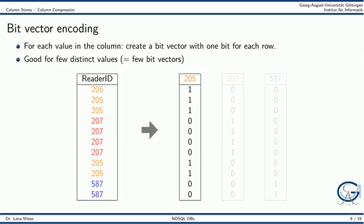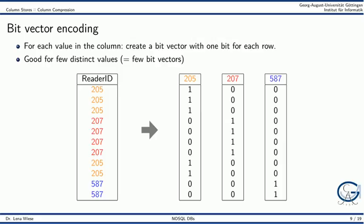The next option is bit vector encoding. For each distinct value in a column, a bit vector is created with one bit for each row. Bit vector encoding usually only makes sense when there are few distinct values in a column. In our example, the value 205 occurs 5 times, so we create a bit vector for this value where the corresponding rows are set to 1. Next we create a bit vector for the value 207, and lastly for the value 587, setting the appropriate bits.